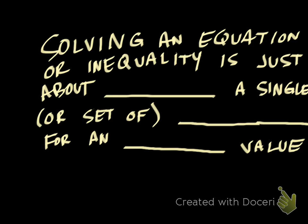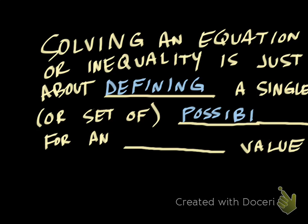Solving an equation is just about defining or determining a single or a set of possibilities for an unknown value. There's a number, we don't know what it is. If it's an equation, we're going to find out what number that can be. If it's an inequality, we're going to find out several numbers that might be.